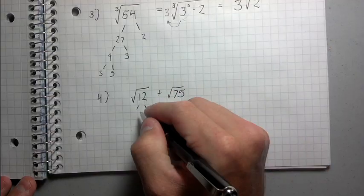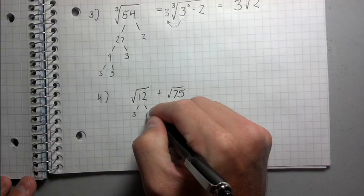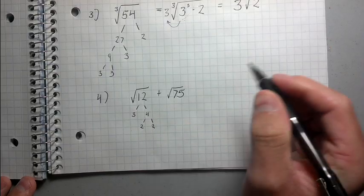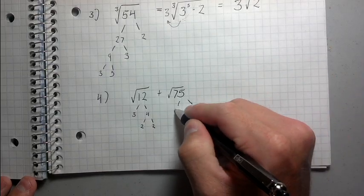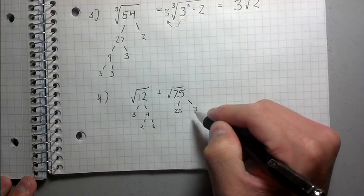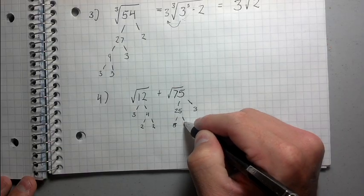So let's start with 12. Okay, so numbers that make 12. 3 and 4. Alright. Factors that make 4. 2 and 2. Alright. So now we're going to do 75. How about 25 and 3. Okay. 25. How about 5 and 5.